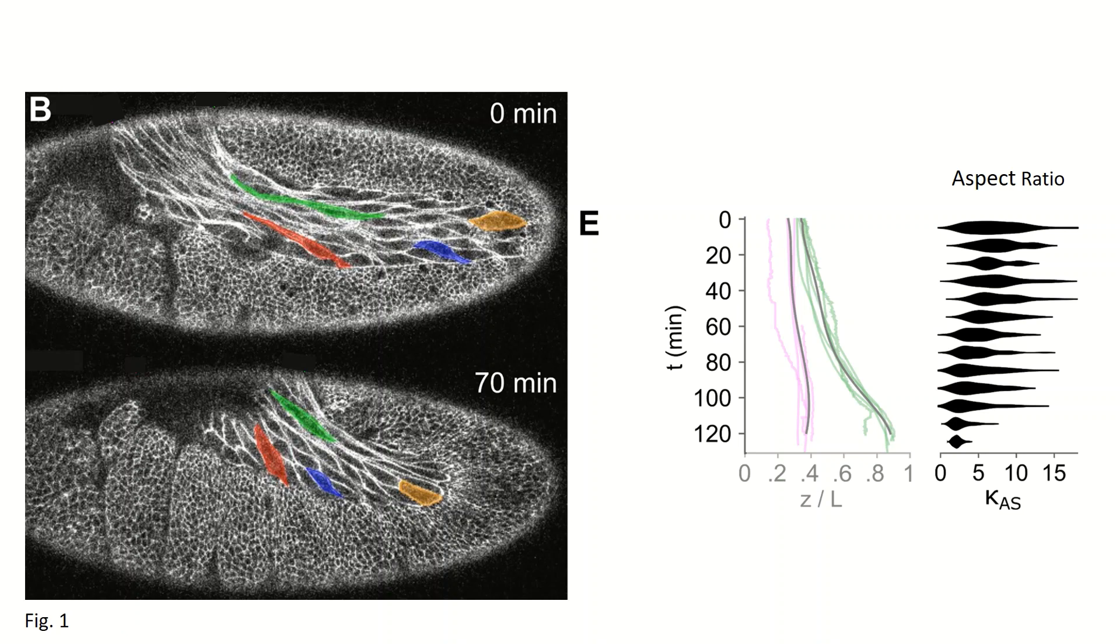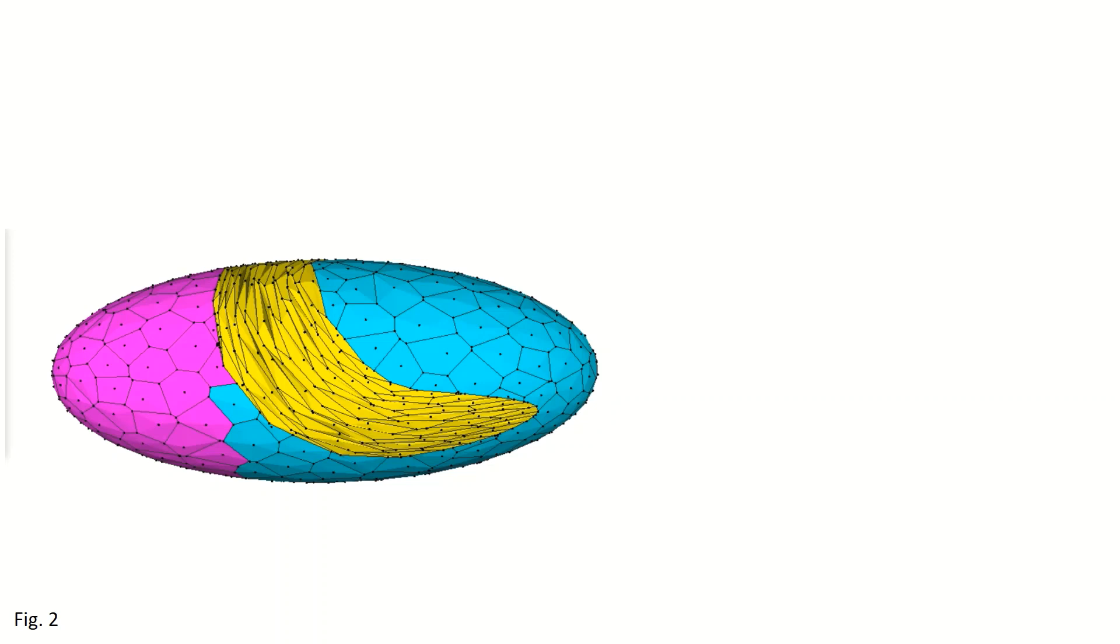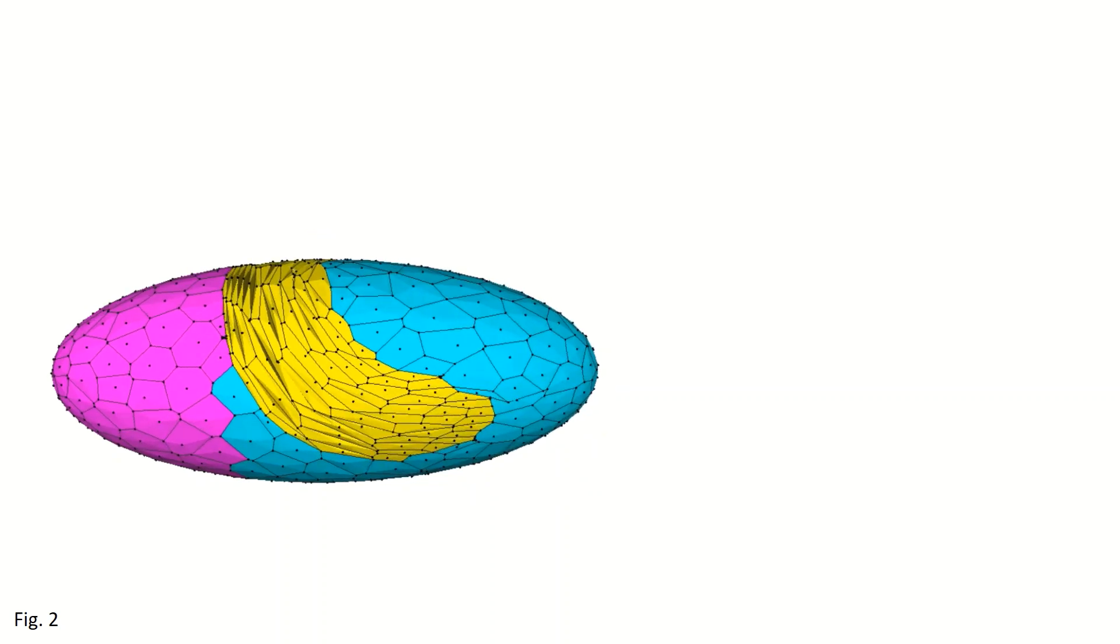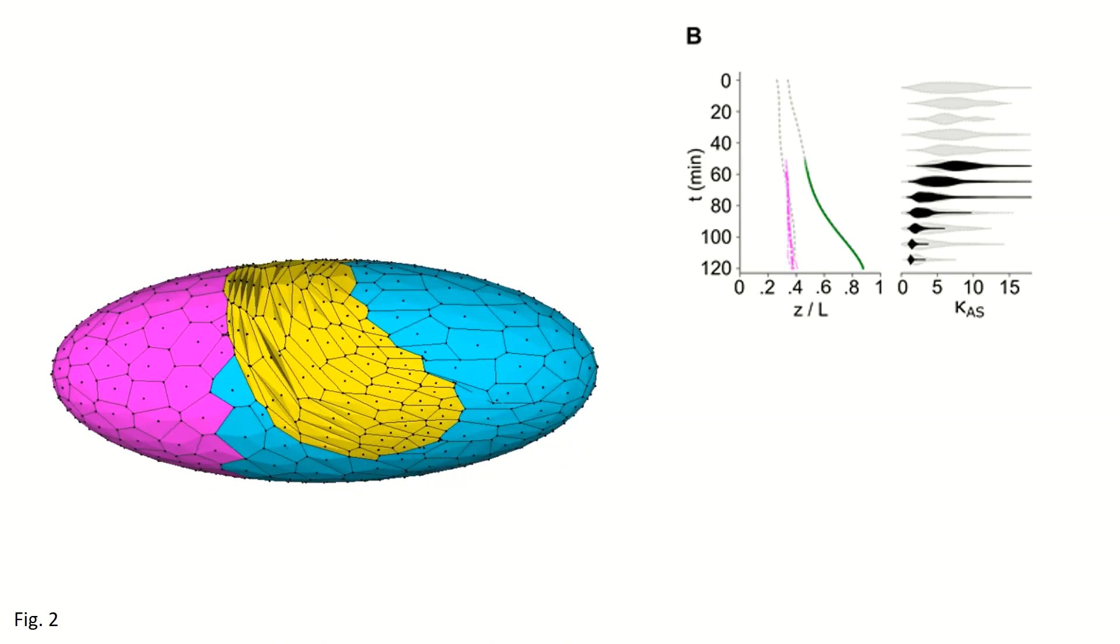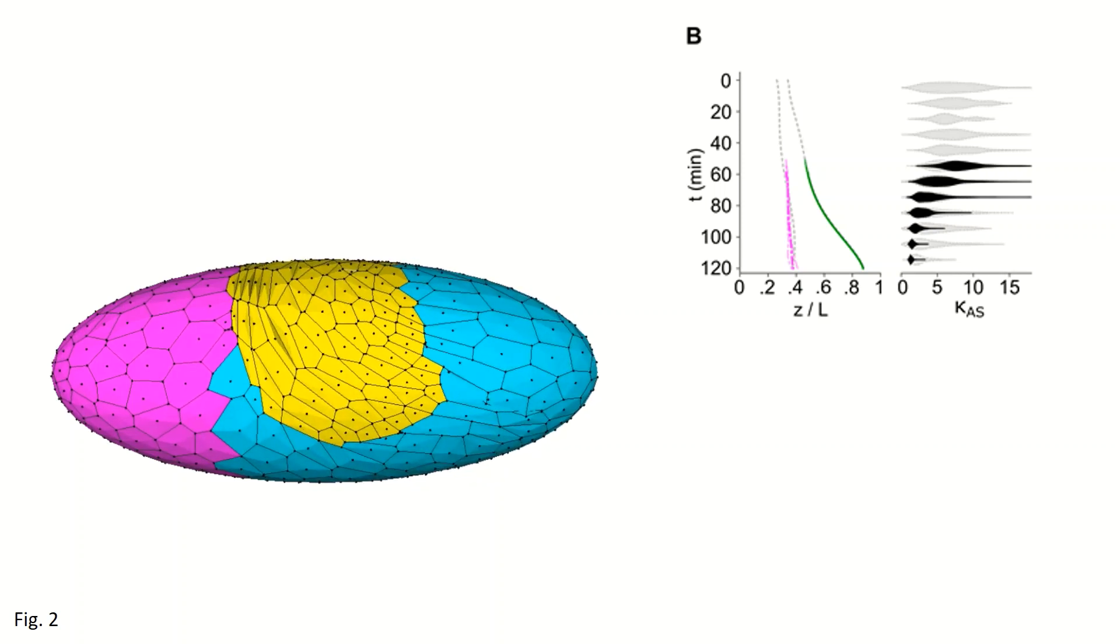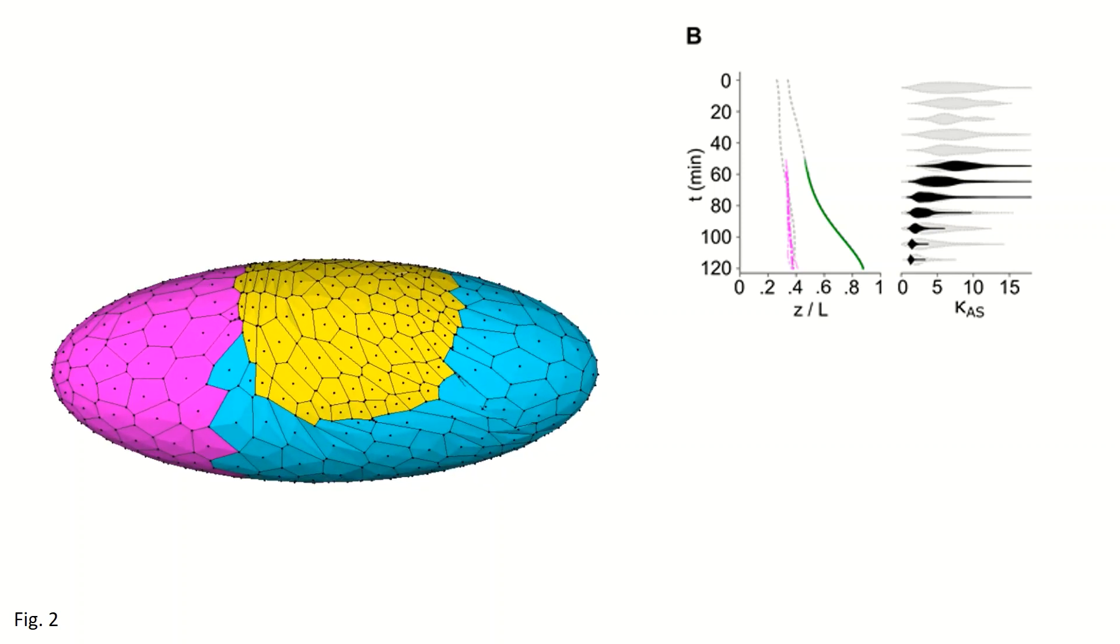The model represents each cell as a finite element constrained to lie on the surface of the embryo. It is matched to experiments by choosing tension values for its cell-cell interfaces that move the telson position appropriately. The acron position and amnioserosa cell aspect ratios are not constrained, but they do closely match experimental data, in gray.